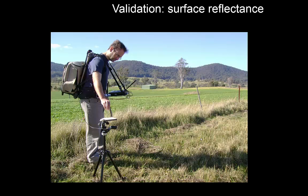Once you have those reflectances — after all the atmospheric correction — you can go out and measure in the field to verify what the satellite is measuring. Here we're going out with our own spectrometer, which I'm carrying on my back. In my hand I hold a wand that measures incoming radiation and the spectrum. I calibrate that with a small reference panel with well-known reflective properties, then hold it over different land surfaces like grass to measure the reflectance spectrum. That's what we compare to the satellite to make sure our surface reflectances are indeed accurate. As you can see, there's quite a lot of effort that goes into processing primary satellite measurements into the products and datasets you'll be using later in this course.